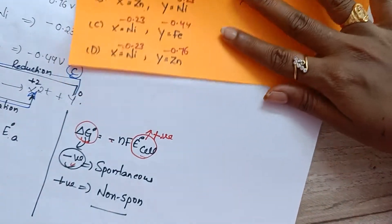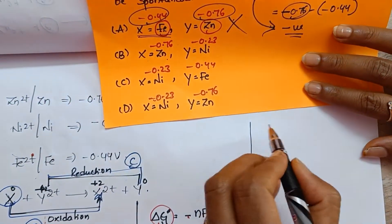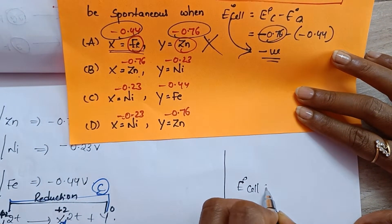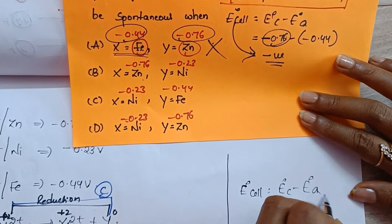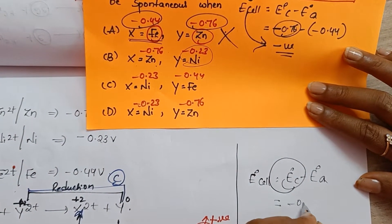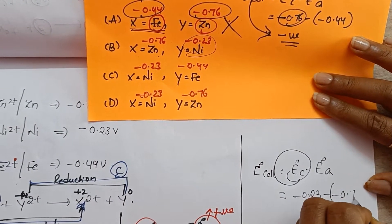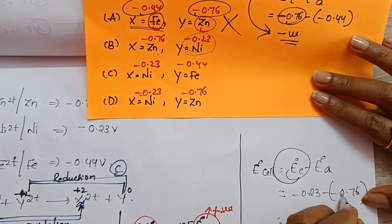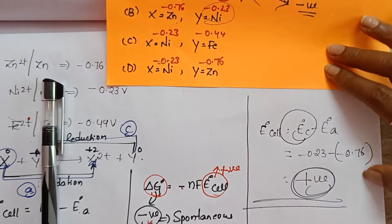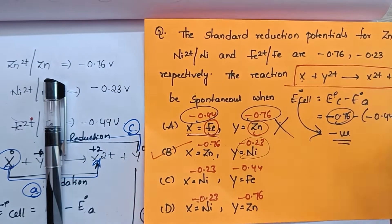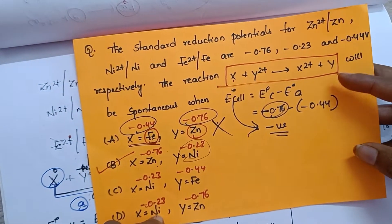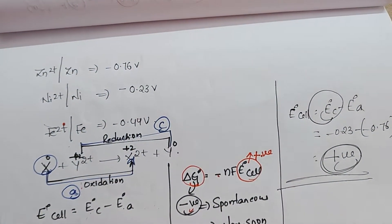See the next option. Do for remaining options also. E naught cell is equal to E naught of cathode minus E naught of anode. Which is cathode? Y is cathode, so you take minus 0.23. Anode is minus 0.76. Minus of minus plus, so total value getting positive. E naught cell should be positive, then only that reaction is possible, spontaneous. Reaction is possible. So option 2. You can do for remaining two also, you get E naught cell negative. Got it?